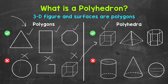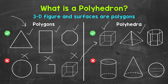Let's move to the right, to the square pyramid. That's a 3D figure, and all of the faces are polygons. The base is a square, and then the rest of the faces are triangles. So this is a polyhedron as well. And then lastly, we have a hexagonal prism, which is a 3D figure and all of the faces are polygons. Two of the faces are hexagons, and then the rest of the faces are rectangles. So this is an example of a polyhedron as well.